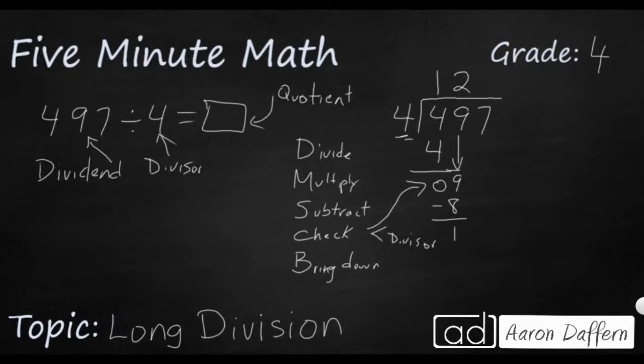So now we are going to bring down, because there's one final number we need to bring down. Seventeen, you start all back over again. Divide. Four divides into seventeen. We need to know our multiplication facts. Four times four is sixteen, so that's as close as we're going to get. Subtract. Seventeen minus sixteen, you get one. Now check. Is that one smaller than the divisor? Yes, it is, but we don't have any more numbers to bring down, so our answer is going to be 124, remainder one.